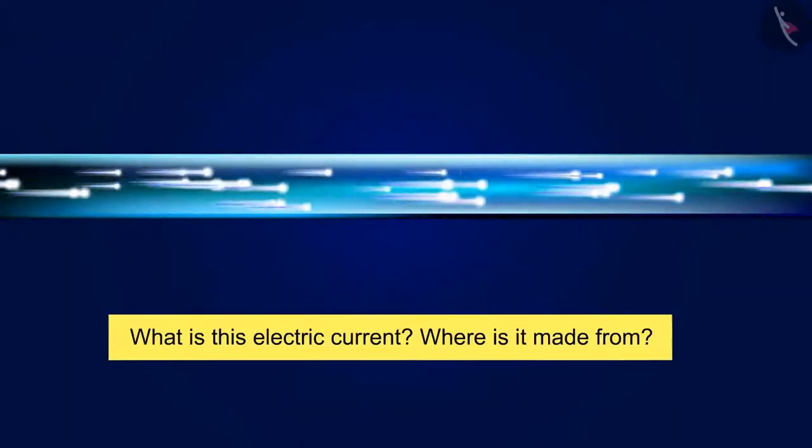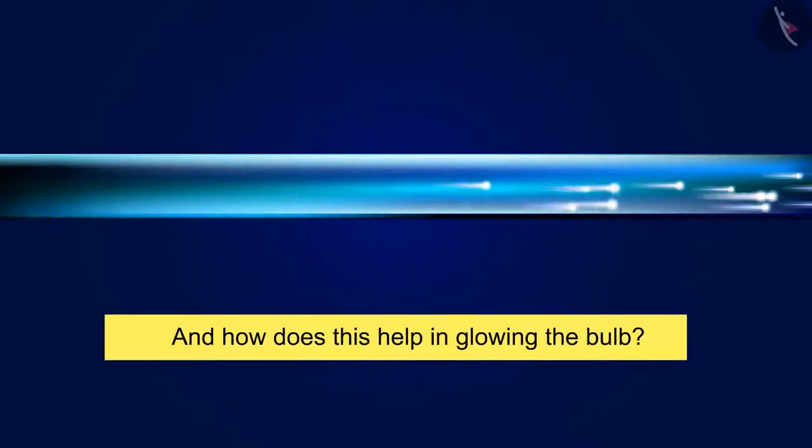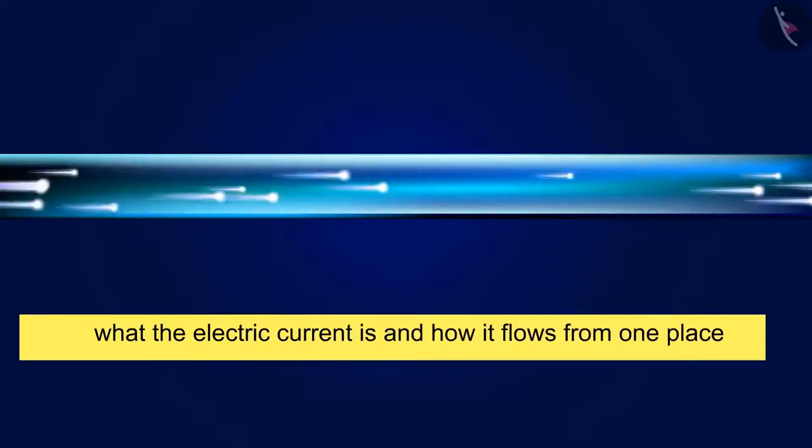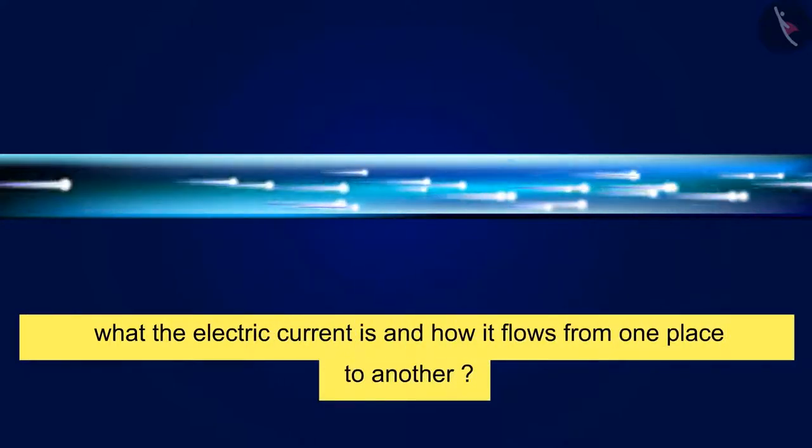But what is electric current, where is it made from, and how does this help in glowing the bulb? In today's video, we'll get to know what electric current is and how it flows from one place to another.